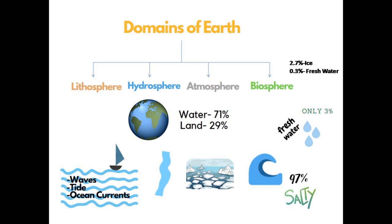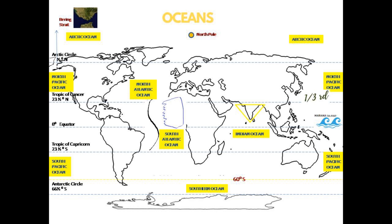One of the largest forms of hydrosphere is the ocean, as it occupies most of the Earth. All oceans are interconnected and always have movements in them. The major three movements of oceans are waves, tides, and ocean currents. We have five major oceans on Earth: Pacific Ocean, Atlantic Ocean, Indian Ocean, Southern Ocean, and Arctic Ocean.